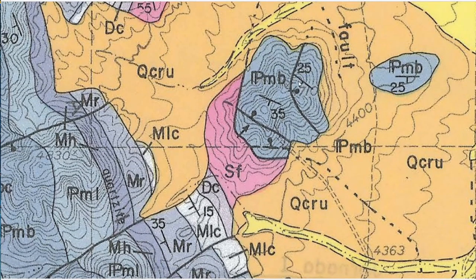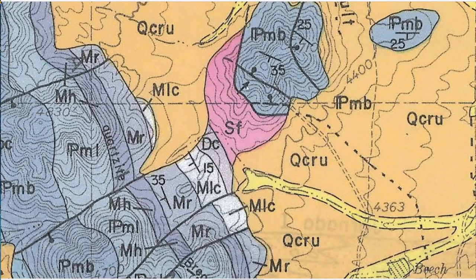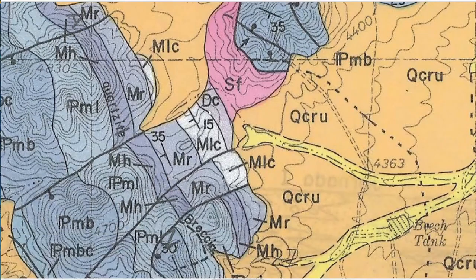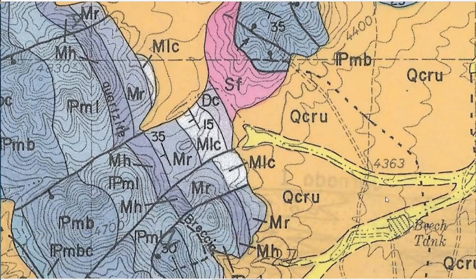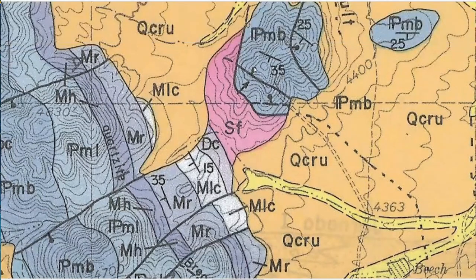This symbol is a strike-and-dip measurement taken on a bed. Up here there's a fold symbol — the arrow represents the trend and plunge of the fold. When you see the normal fault balloon symbol, it points to the down-dropped block; all of these indicate the down-dropped side.